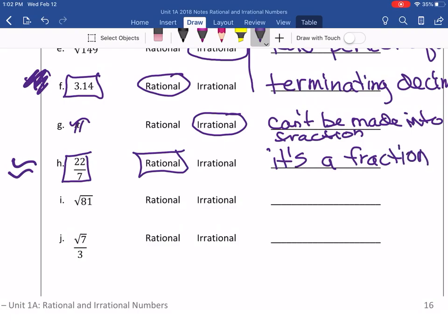How about letter I? Square root of 81. Is that a perfect square? Yes. Because that equals positive, negative 9. That is a perfect square. Therefore, it's rational. Explanation: It is a perfect square. That's what you need to write there.